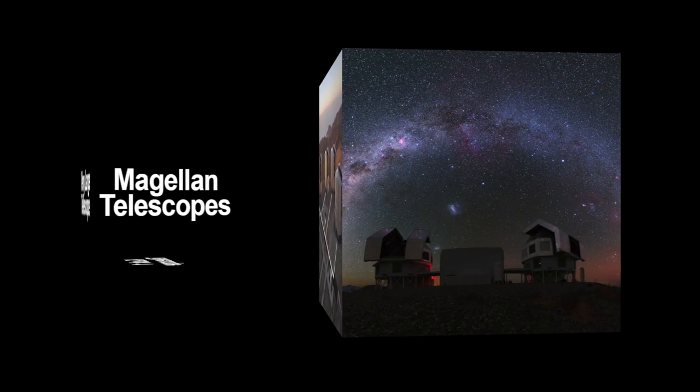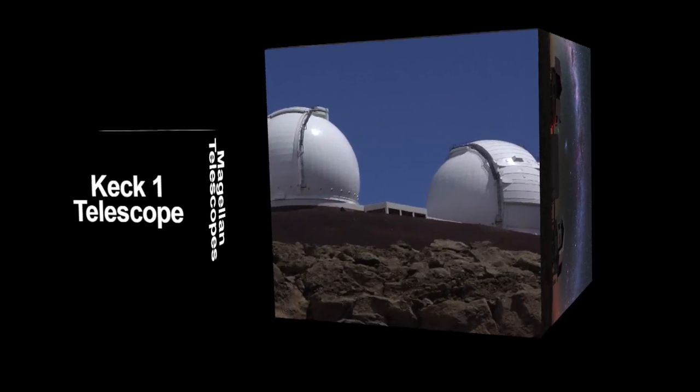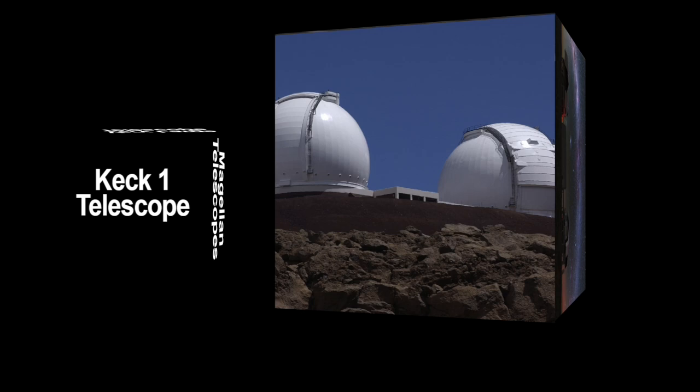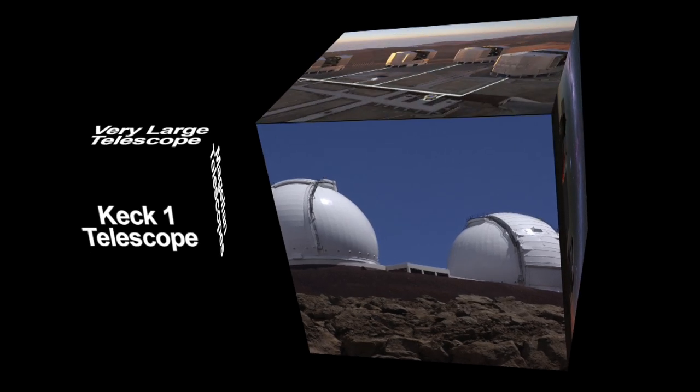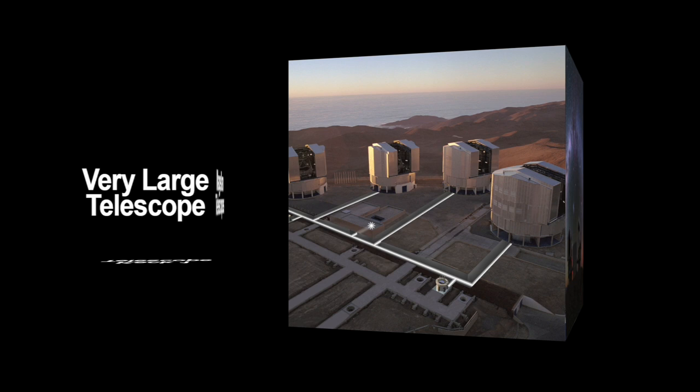The team used one of Carnegie's 6.5 meter Magellan telescopes in Chile to observe five of the Segue 1 stars. Another was studied with the 10 meter Keck 1 telescope in Hawaii. The final star was identified and measured by a competing team using the European Southern Observatory's 8.2 meter Very Large Telescope, which is also in Chile.